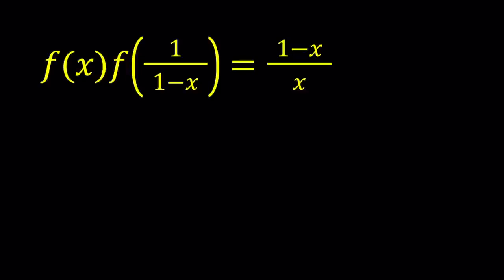I'm going to be using a lot of substitution here, so let's go ahead and number our equations. Starting with this one, let's call this equation number 1. Now I'm going to replace x with 1 over 1 minus x.